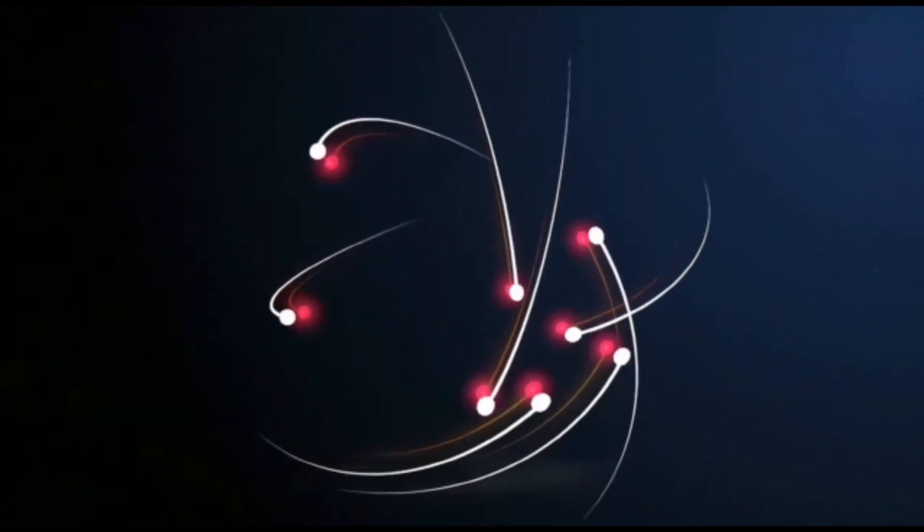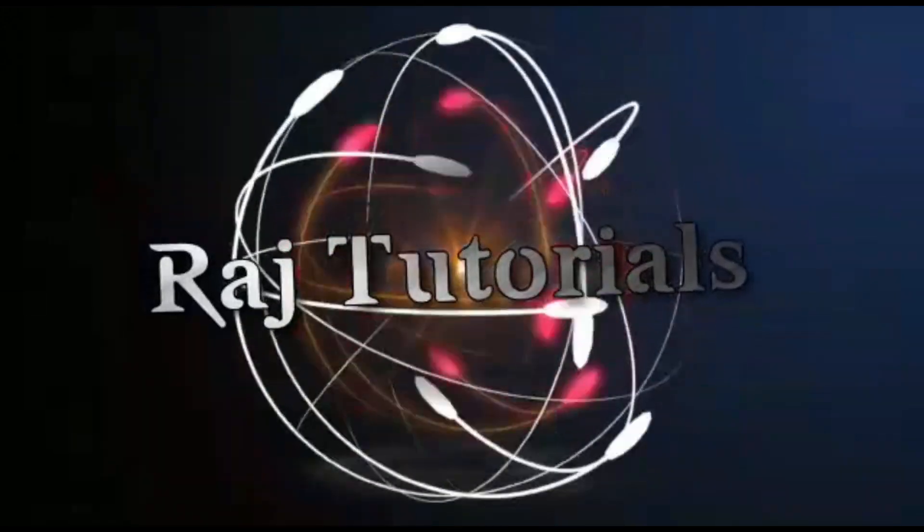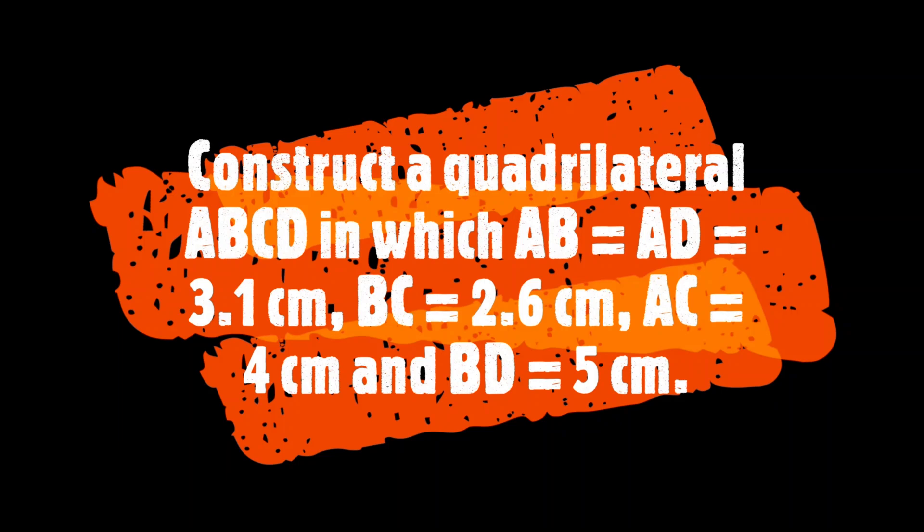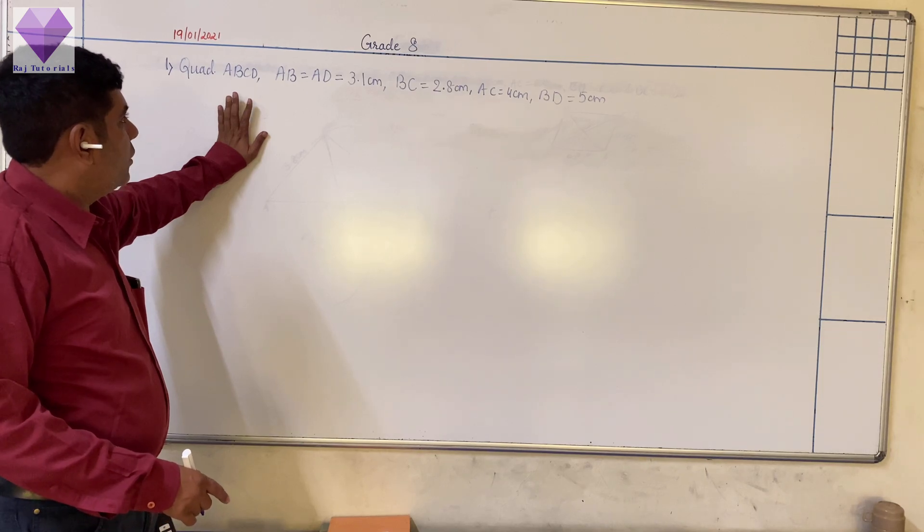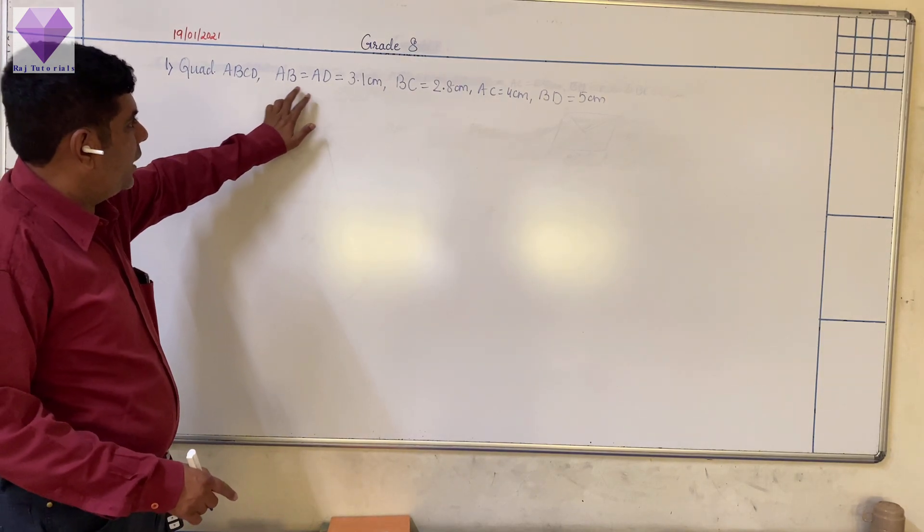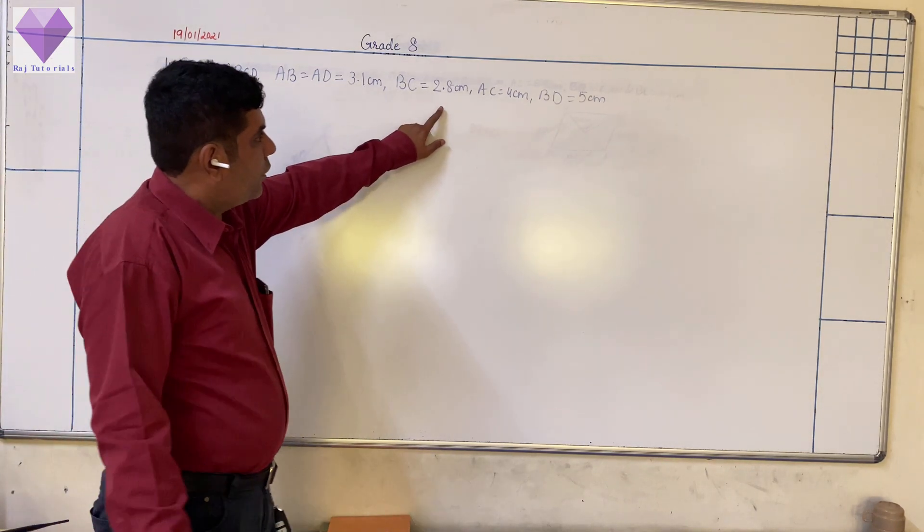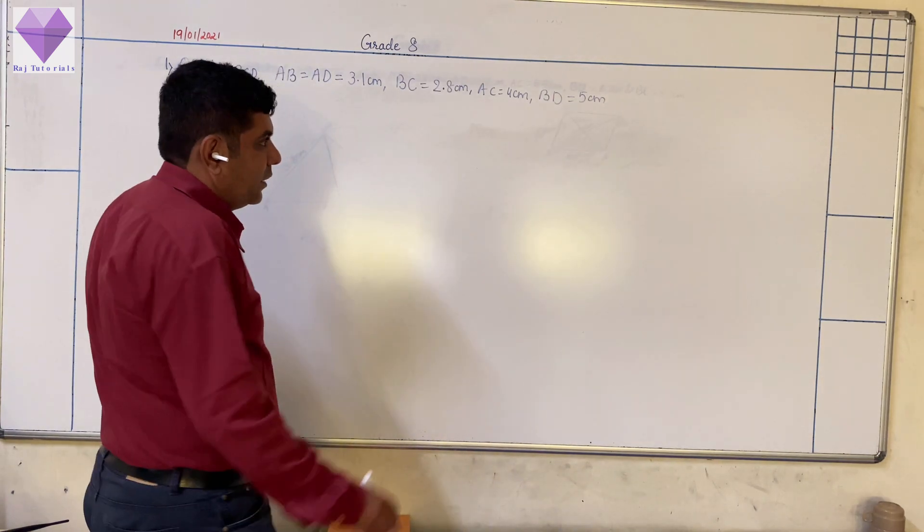Hey, my next question is, I want to construct a quadrilateral ABCD, where AB and AD both are equal to 3.1 centimeter, BC is 2.8 centimeter, AC is 4 centimeter, and BD equals 5 centimeters.